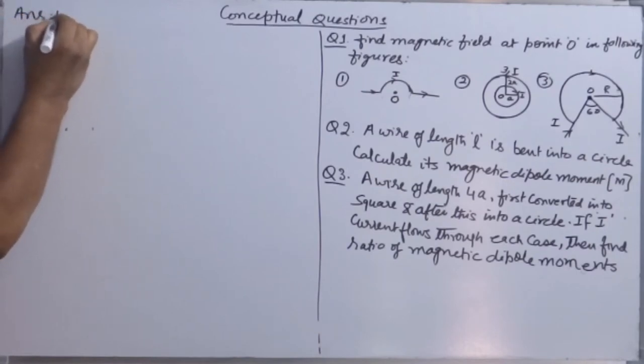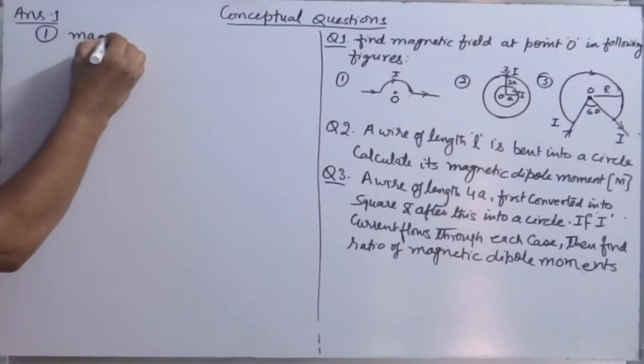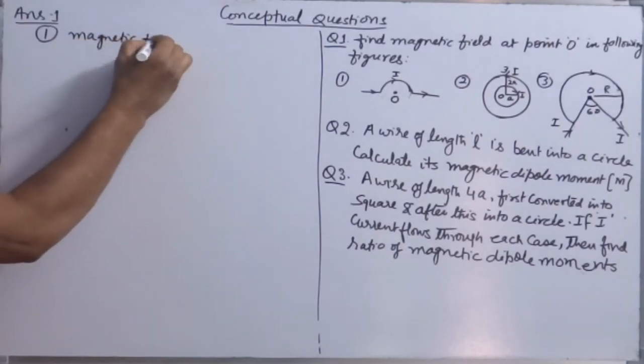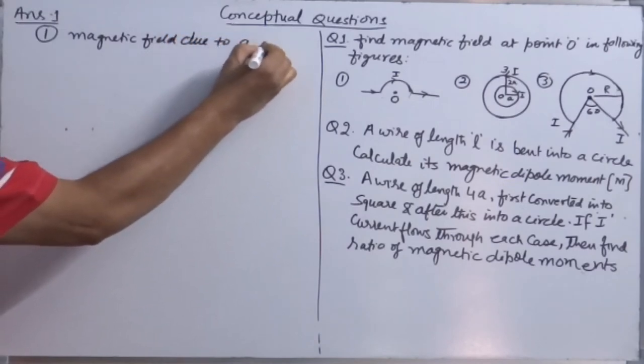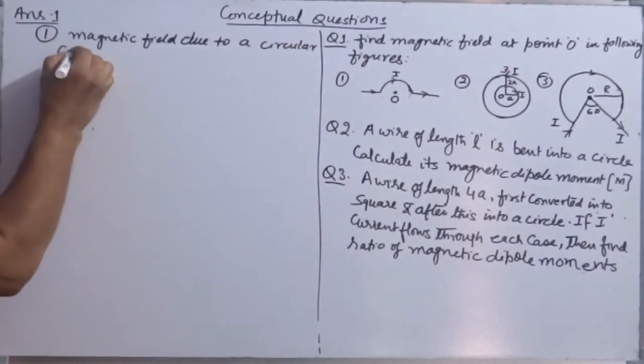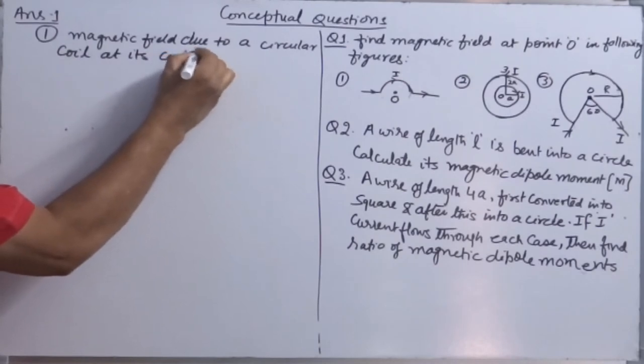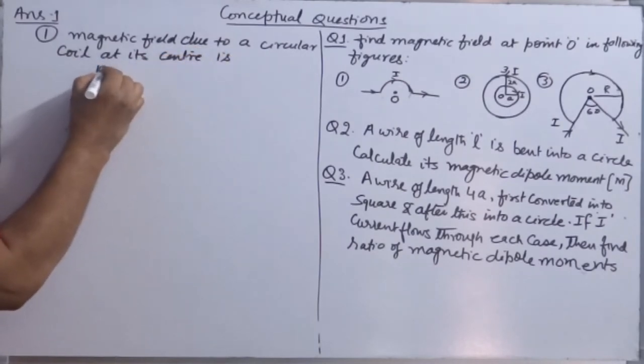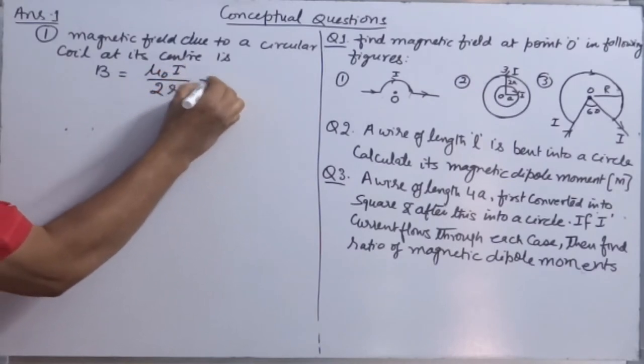Answer number 1, part 1 figure. It's a semi-circular coil and magnetic field due to a circular coil at its center is B = μ₀I/2R.